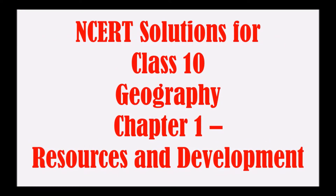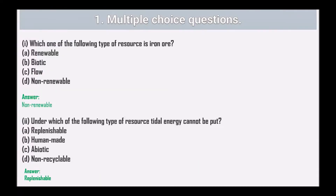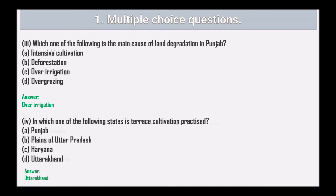Today we will see a video related to NCERT solutions for Class 10 Geography, Chapter 1: Resources and Development. Let's solve the textbook exercise. First multiple choice question: which type of resource is iron ore? It is non-renewable. Under which type of resource can tidal energy be put? It is renewable.